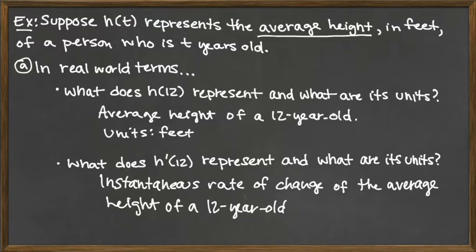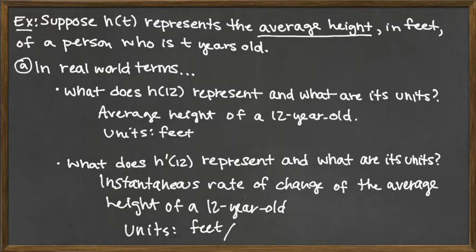What would the units be? We're talking about a rate of change, which is the change in the output value over the change in the input value — because this rate of change is really coming from slope. The output value is the height measurement, so that's feet. The input value is t, measured in years. So our units would be feet per year.